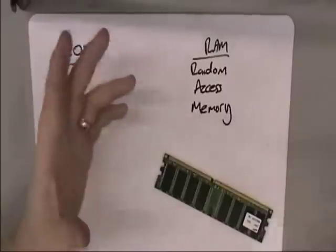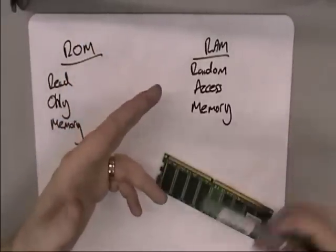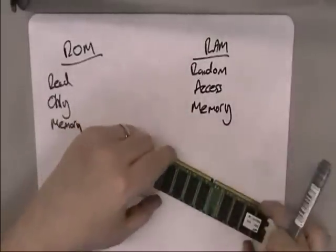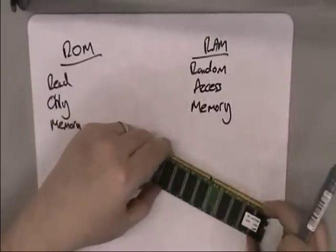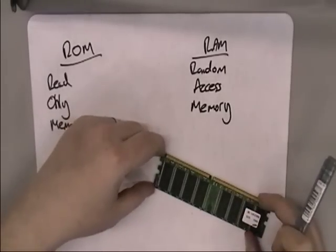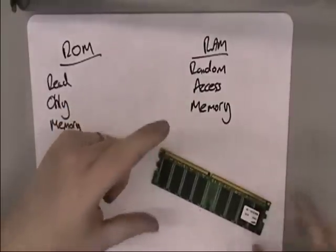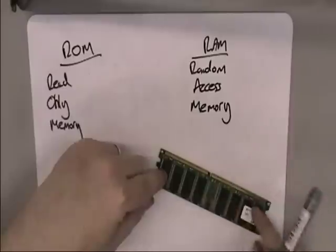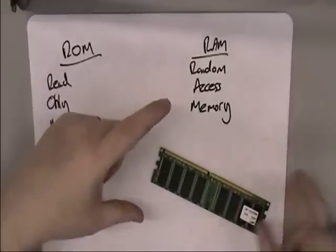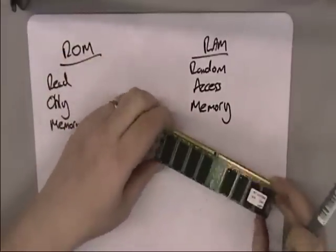As you're loading your word processor, your music player, your web browser — the instructions for how to run that program get copied into RAM for use by the processor. The processor can execute those instructions, and the data you need is also stored there. So the data for this video is very temporarily being stored in your RAM so your computer can process it and display it on your screen for you to watch.